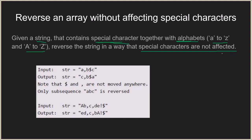Let us understand this with an example. As input we are given the string 'a,b$c' and as output we get 'c,b$a'. The position of comma and dollar sign remains the same — still at the second and fourth positions respectively. But the position of the alphabets is reversed: 'a' was the first alphabet in the input string and becomes the last in the output, while 'c' was the last alphabet and becomes the first. So only the subsequence 'abc' is reversed and the special characters remain wherever they were.